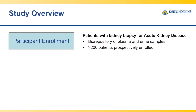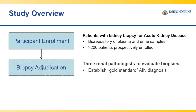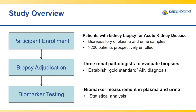In this study, there are three important parts involved in novel biomarker development. The first part is participant enrollment — we enrolled 200 patients prospectively who were getting kidney biopsies for acute kidney disease and created a biorepository of plasma and urine samples. Following that, to establish the gold standard, we had the renal biopsy slides evaluated by three independent renal pathologists, establishing the gold standard for AIN versus all other diagnoses. The third part was developing novel biomarkers and assays to identify a non-invasive method to diagnose AIN.